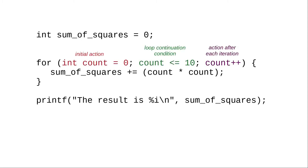The important thing to remember about a for loop is its three parts. The initialization, the loop continuation condition, and the action after each iteration.